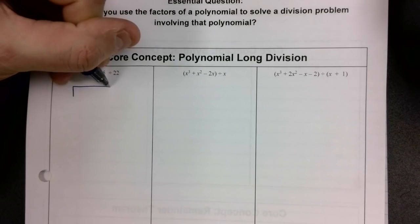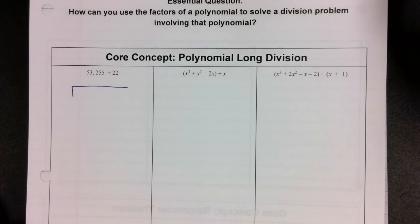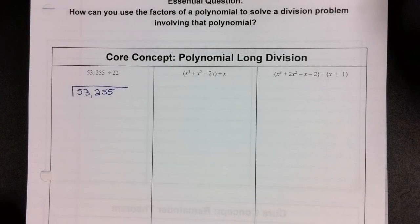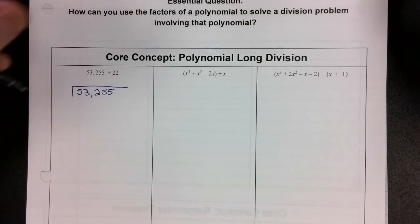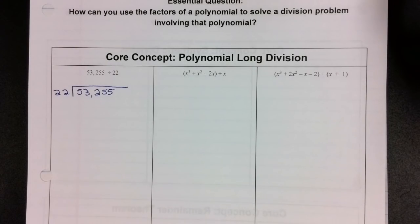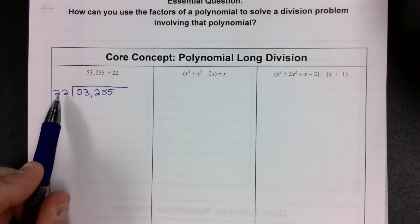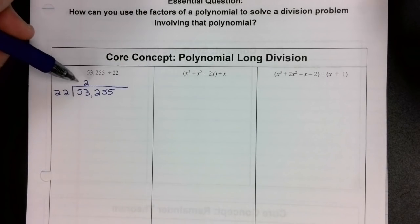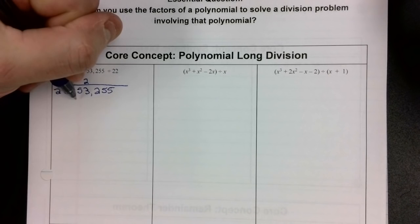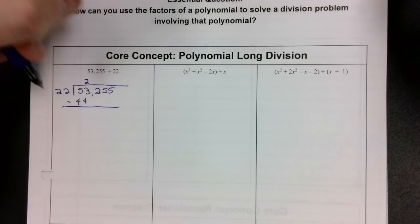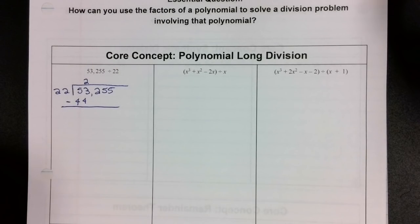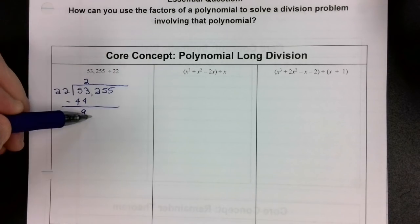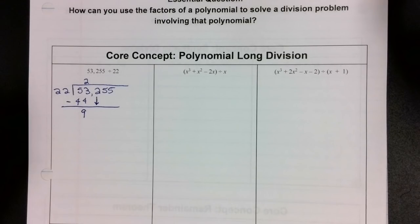We make that little long division sign, and we put the 53,255 underneath there, and whatever we're dividing by we put on the outside. Then we go ahead and do our division — we figure out how many times 22 goes into 53, and that's going to be twice. We go 2 times 22, which is 44, put it right down there, and then we subtract. 53 minus 44 is 9, and then we take this 2 and bring it down. Sometimes teachers put a little arrow there as a reminder to bring that down.